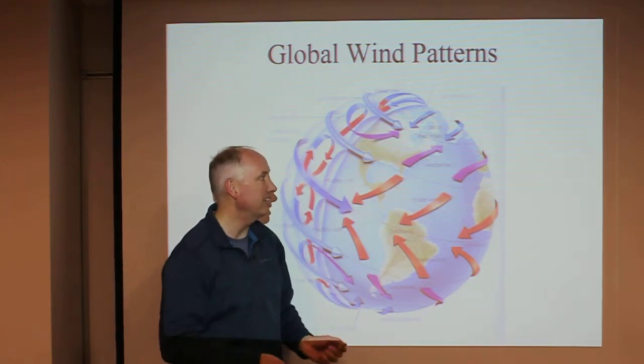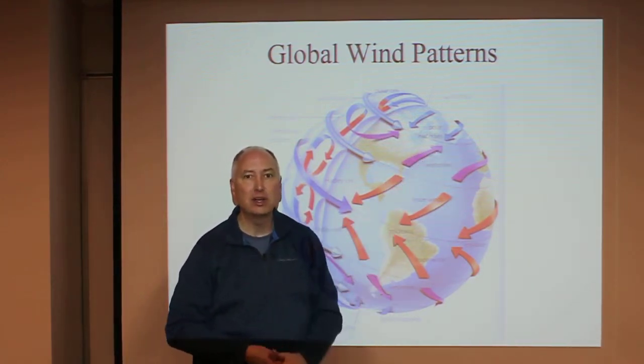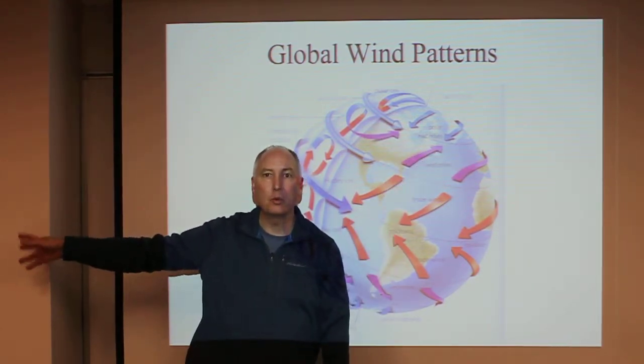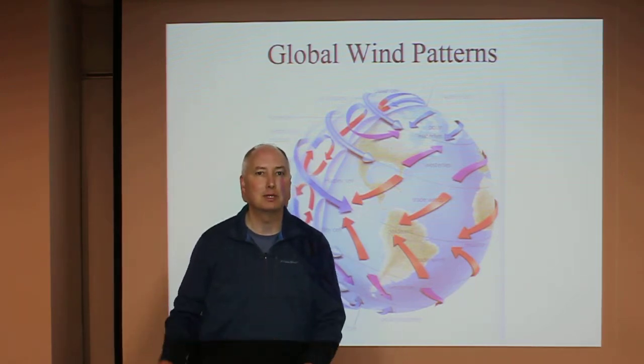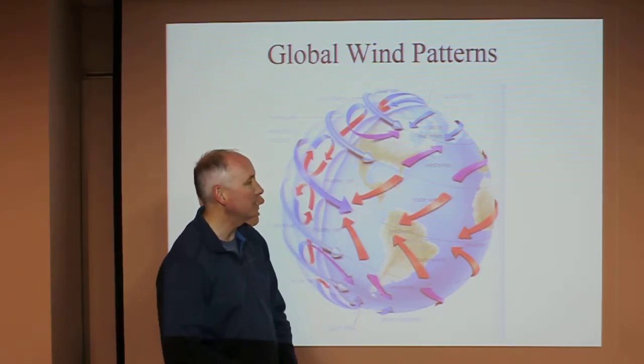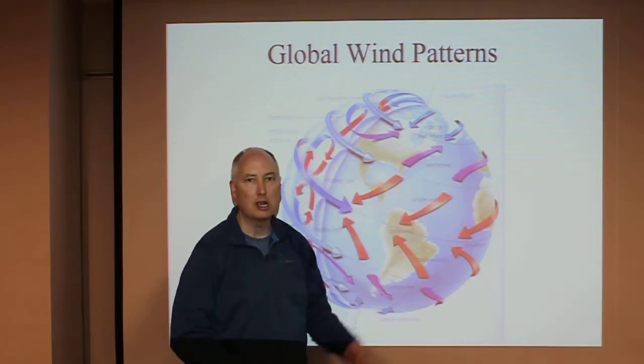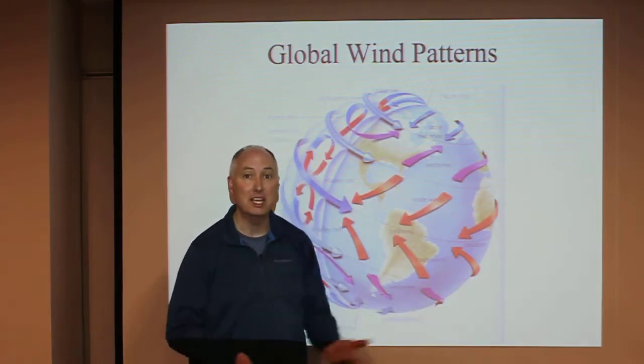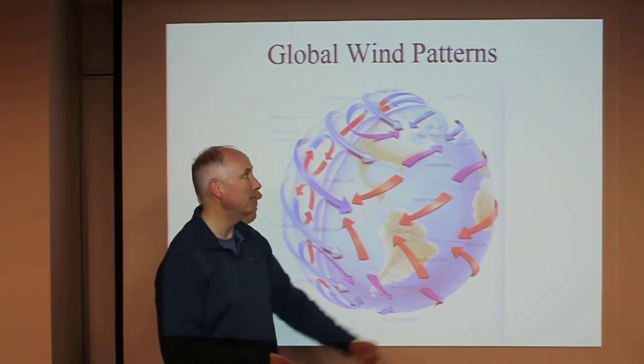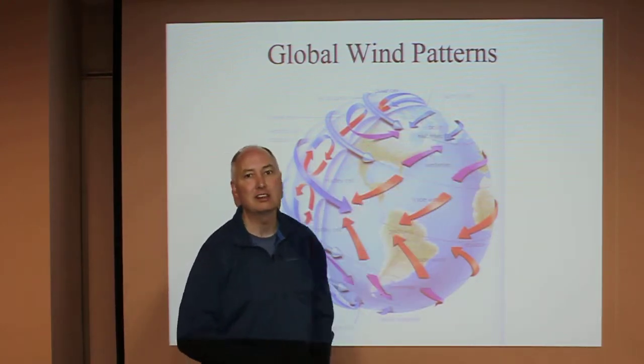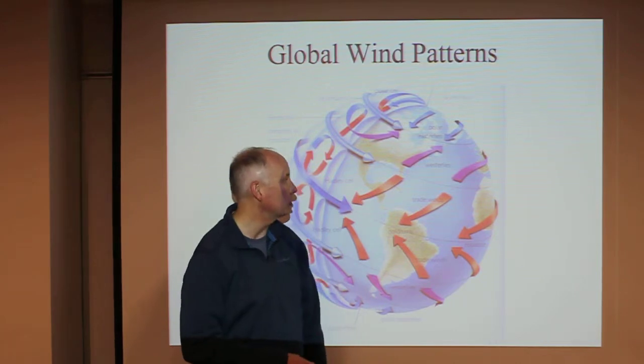We live in the westerlies, and so we think that all of the storms come from the west—they come from California, Alaska, the Pacific. But that's only true in the middle latitudes. In the tropics, you'd say all the storms come from the east, and in the polar regions, storms come from the east as well.